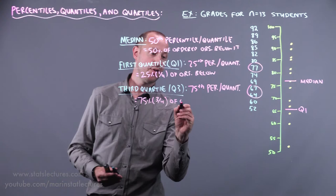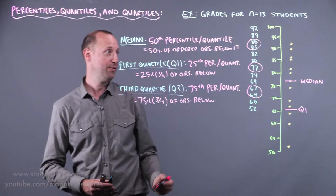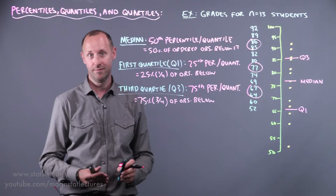And again, without getting stuck on the exact number, it looks like it's roughly around here. We're cutting it to have three quarters below, one quarter above. So it's kind of in the range about there. So this is the third quartile, or the 75th percentile or 75th quantile.